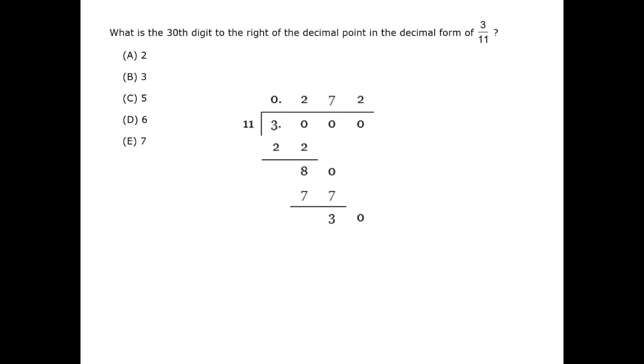Once we reach this point of the long division, we can pause, because there is a pattern that will repeat, since we have 30 down at the bottom of the long division. The digits 2 and 7 will alternate, so 3 over 11 equals 0.27 repeating.